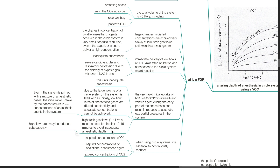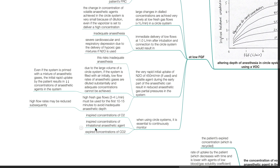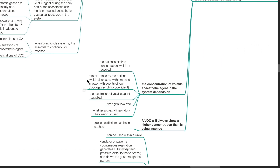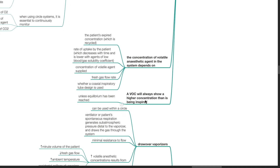High flow rates may be reduced subsequently. When using circle systems, it is essential to continuously monitor inspired concentrations of oxygen, inhaled anesthetic agent, and expired concentrations of CO2. The concentration of volatile anesthetic agent in the system depends on the patient's expired concentration which is recycled, the rate of uptake by the patient (which decreases with time and is lower with agents of low blood-gas solubility coefficient), the concentration of volatile agent supplied, fresh gas flow rate, and whether a coaxial inspiratory tube design is used. A VOC will always show a higher concentration than is being inspired unless equilibrium has been achieved.